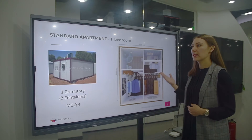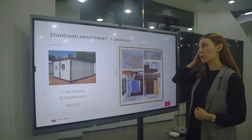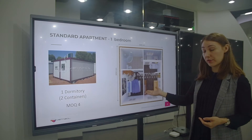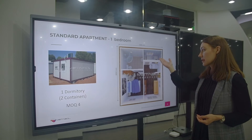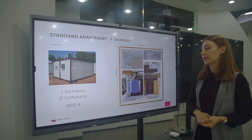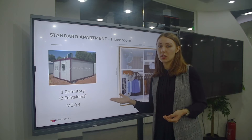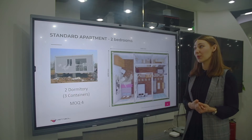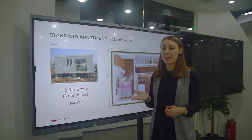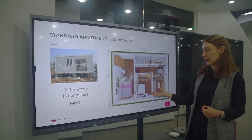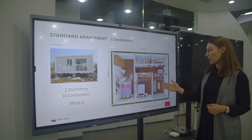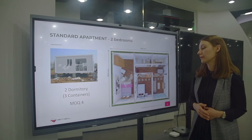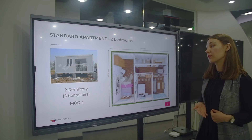Let's have a closer look at the standard apartments. The one-bedroom has one bedroom, one living room, a small kitchen, and a bathroom — MOQ is four sets. The two-bedroom apartment has two bedrooms, one living room, a bathroom, and a kitchen — MOQ is also four sets.